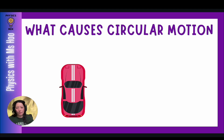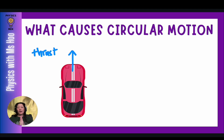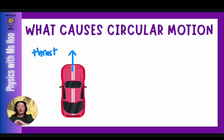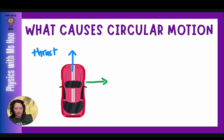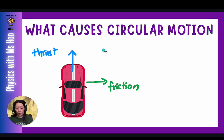Let's understand what causes circular motion. Say we've got a car moving forward due to the engine thrust — this blue arrow represents the thrust of the engine. If you're driving a car without holding the steering wheel, the car just tends to move straight forward. But if you wanted to make a turn, you'll have to turn the steering wheel. When you turn the steering wheel, you're applying a force that translates to a force on the wheels, creating friction between the wheels and the road. These two forces act together to create a resultant force that causes the car to change direction.